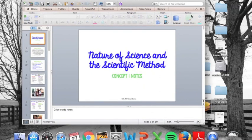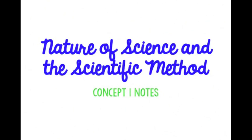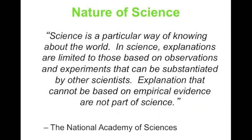Okay, we're going to go over Concept 1 notes on scientific method and the nature of science. The nature of science - I love this quote from the National Academy of Sciences because it does a perfect job explaining what science really is. It says science is a particular way of knowing about the world. In science, explanations are limited to those based on observations and experiments that can be substantiated by other scientists. Explanations that cannot be based on empirical evidence are not part of science. This really shows that the emphasis of science is on experimentation, and it's critical that you understand the scientific method that goes behind designing any experiment or laboratory investigation.